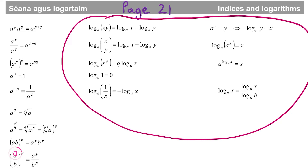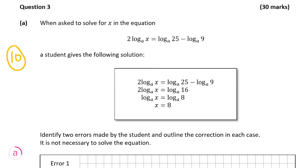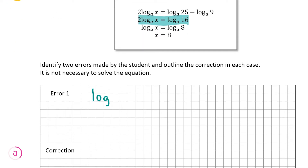So we're going to make sure that all of these rules were followed in the student solution, and if they weren't, that will be our error — and we have to find two errors. So let's go back and have a look. So 2 log_a of x is equal to log_a of 25 minus log_a of 9, and then on the next step they get 2 log_a of x is equal to log_a of 16. That's mistake number one — log_a of 25 minus log_a of 9 is not equal to log_a of 16.